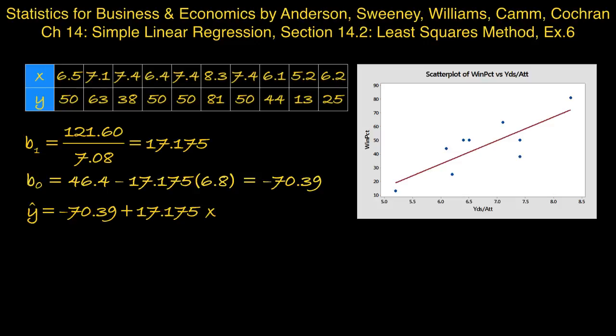For the 2011 season, the average number of passing yards per attempt for the Kansas City Chiefs was 6.2. Use the estimated regression equation developed earlier to predict the percentage of games won by the Kansas City Chiefs. So we'll plug 6.2 into our equation and obtain 36.1% as the prediction of the percentage of games won by the Kansas City Chiefs.